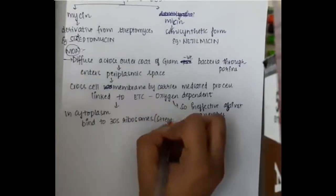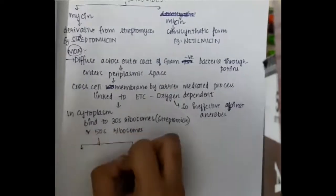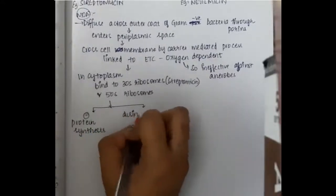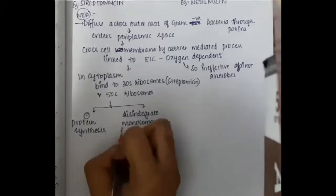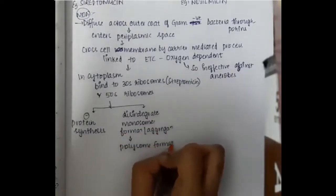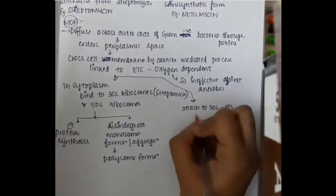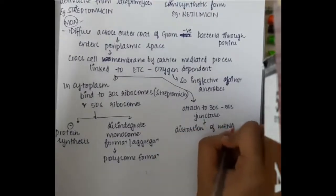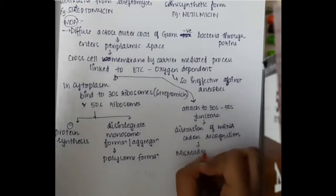In the cytoplasm, aminoglycosides bind to 30S ribosomes (primarily streptomycin) and also to 50S ribosomes, inhibiting protein synthesis. They also disintegrate monosome formation, causing polysome aggregation. Additionally, they attach to the 30S–50S junction and cause distortion of mRNA codon recognition.